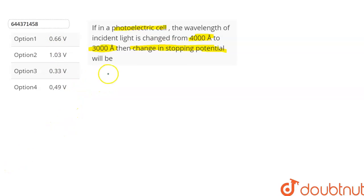According to Einstein's photoelectric equation, we know that hc by lambda minus phi is equal to eV0, where hc by lambda is the energy of incident light, phi is the work function of the surface, e is the charge of one electron, and V0 is the stopping potential. Let lambda 1 is equal to 4000 angstrom and lambda 2 is equal to 3000 angstrom.